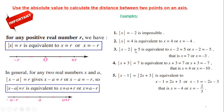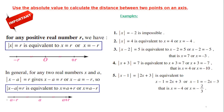Also |x plus 3| = 7 gives x plus 3 = 7 and x plus 3 = minus 7. In the last one, x minus 1 = |2x plus 3|, then x minus 1 = 2x plus 3 and x minus 1 = minus(2x plus 3), and we solve the equation. You can practice this — the past slide — on a draft.